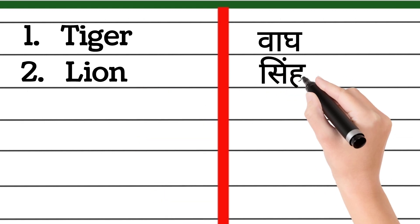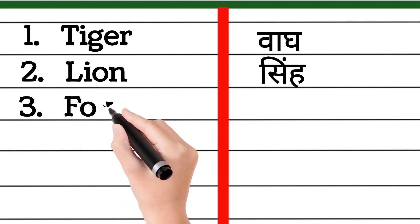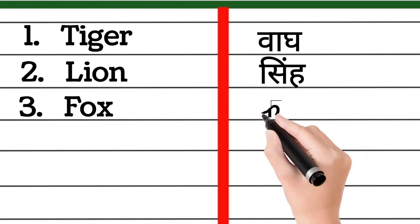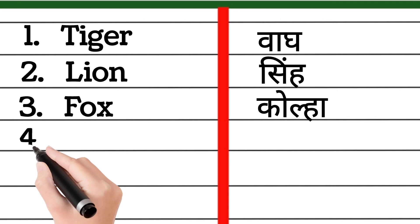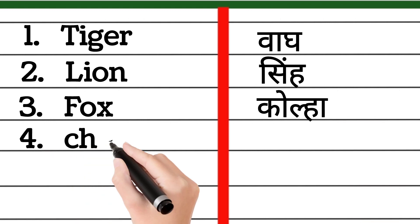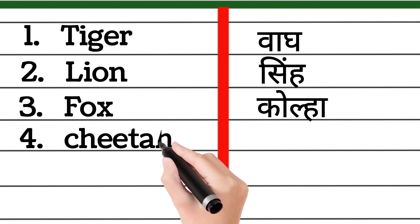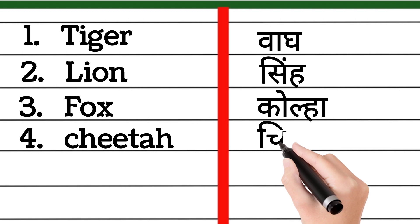F-O-X, fox. Fox means cola. C-H-E-E-T-A-H, chita. Chita means chita.